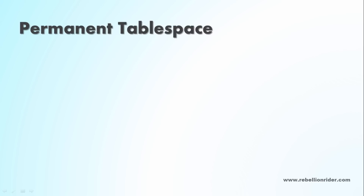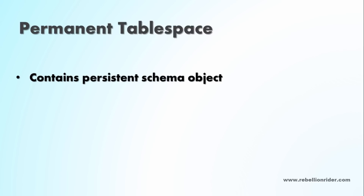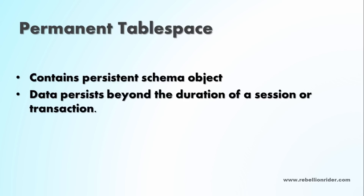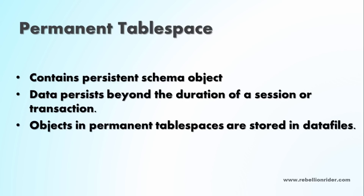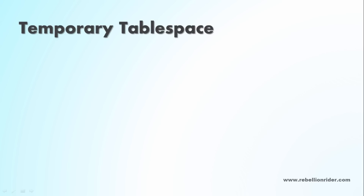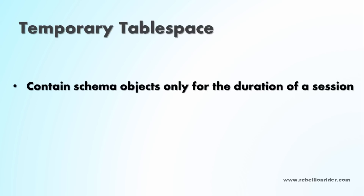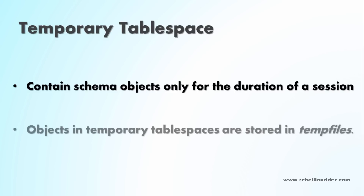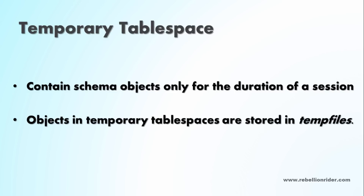Permanent tablespace is the tablespace which contains persistent schema objects, meaning data stored in permanent tablespace persists beyond the duration of a session and transaction. Objects in permanent tablespace are stored in data files. On the contrary, temporary tablespaces are tablespaces which contain schema objects only for the duration of a session, meaning data stored in temporary tablespace exists only for the duration of a session or a transaction. Objects in temporary tablespace are stored in temp files.